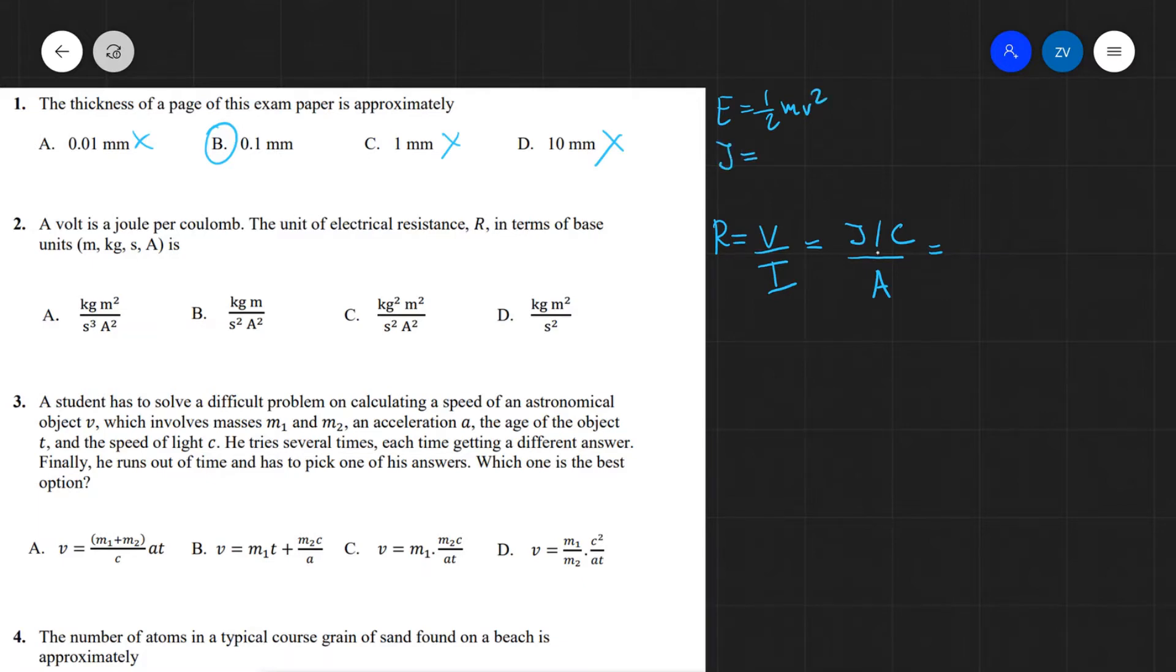So this means that a joule will be a kilogram, so that's the unit of mass, the half has no units, times meters per second squared, which means that a joule will be kg m squared s to the power of minus two. Okay, so this is our joule.